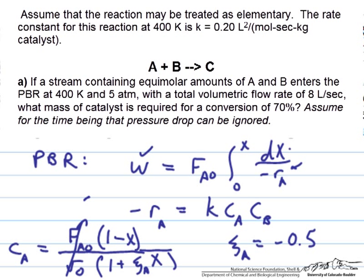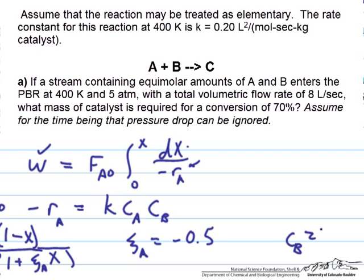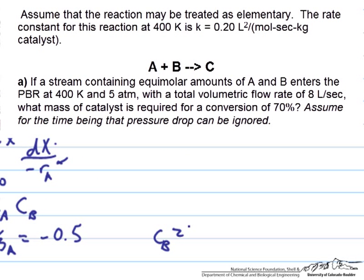Epsilon A here is equal to negative 0.5, and we'll just plug that in below. We'll simplify and note that this value is equal to C_A naught. Next we also need to solve for the concentration of B, and we have equimolar concentrations of A and B. B is consumed at the same rate as A.